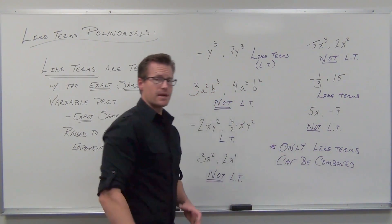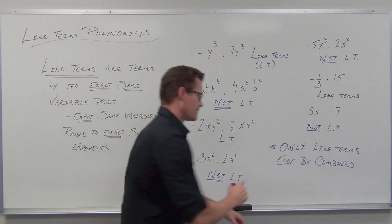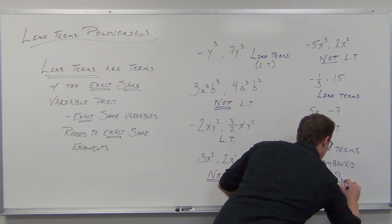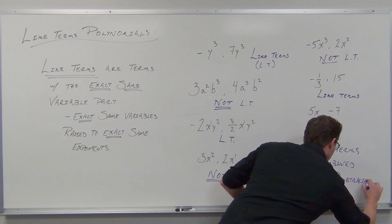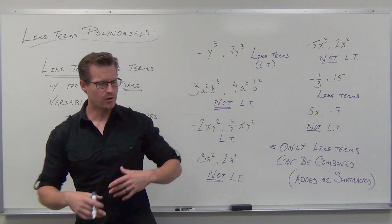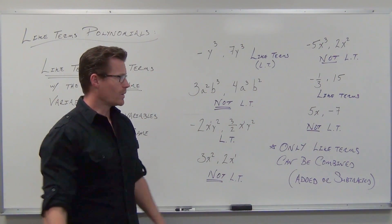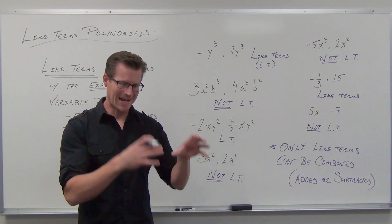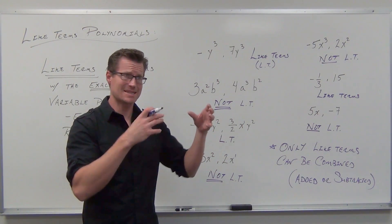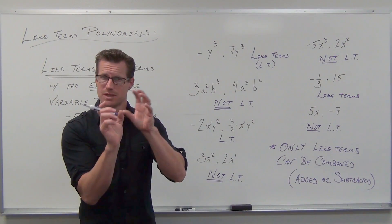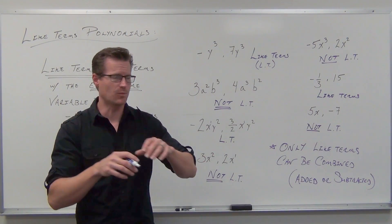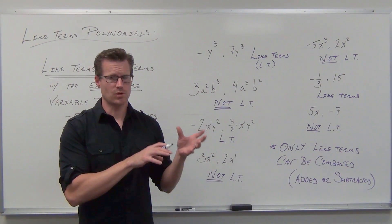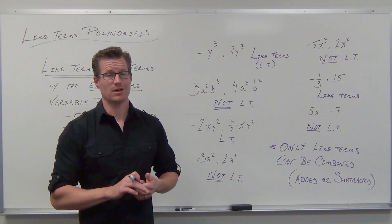Only like terms can be combined, and by combined we mean adding and subtracting. So we now know what terms are, we know what polynomials are as terms joined by addition and subtraction, and we now know what like terms are — terms with exactly the same variables that have exactly the same exponents on each and every variable. And now we know one last statement: only like terms can be combined, only like terms can be added or subtracted. We're going to study this when we talk about how to add polynomials in the very next video.